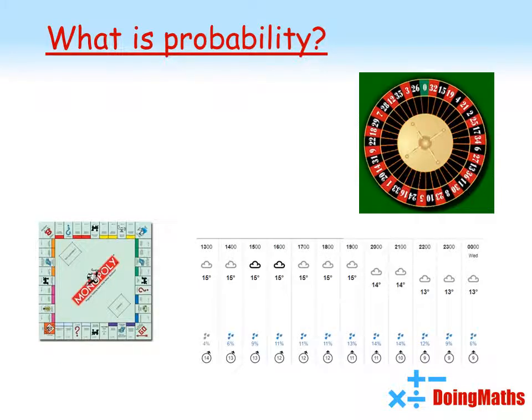Probability is used with the weather. So on this picture here, we've got the percentage chance of it raining during any particular hour.